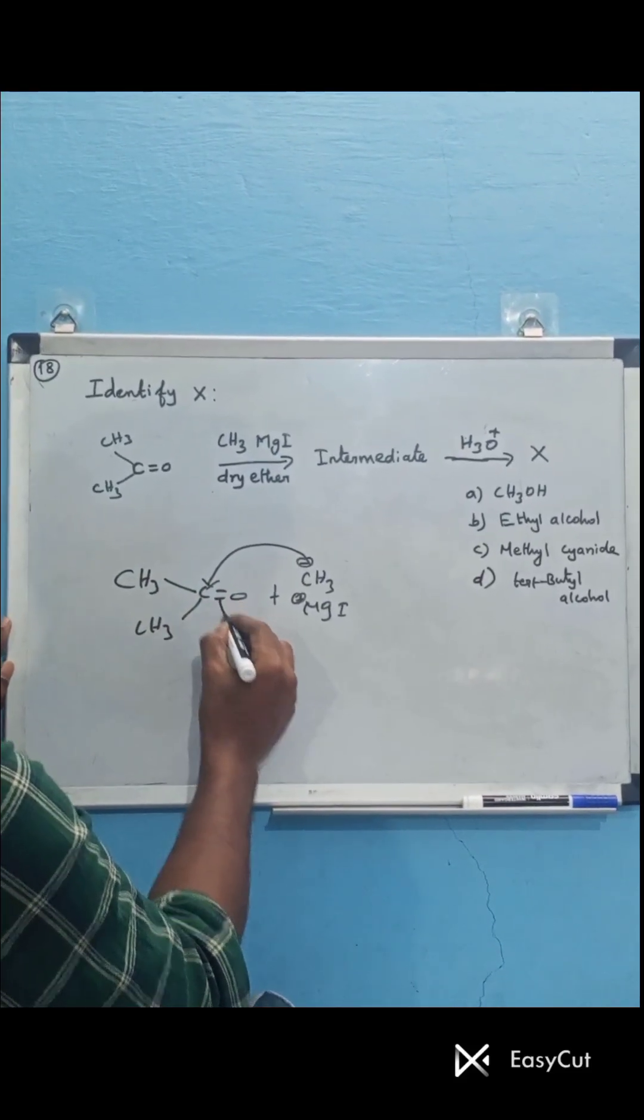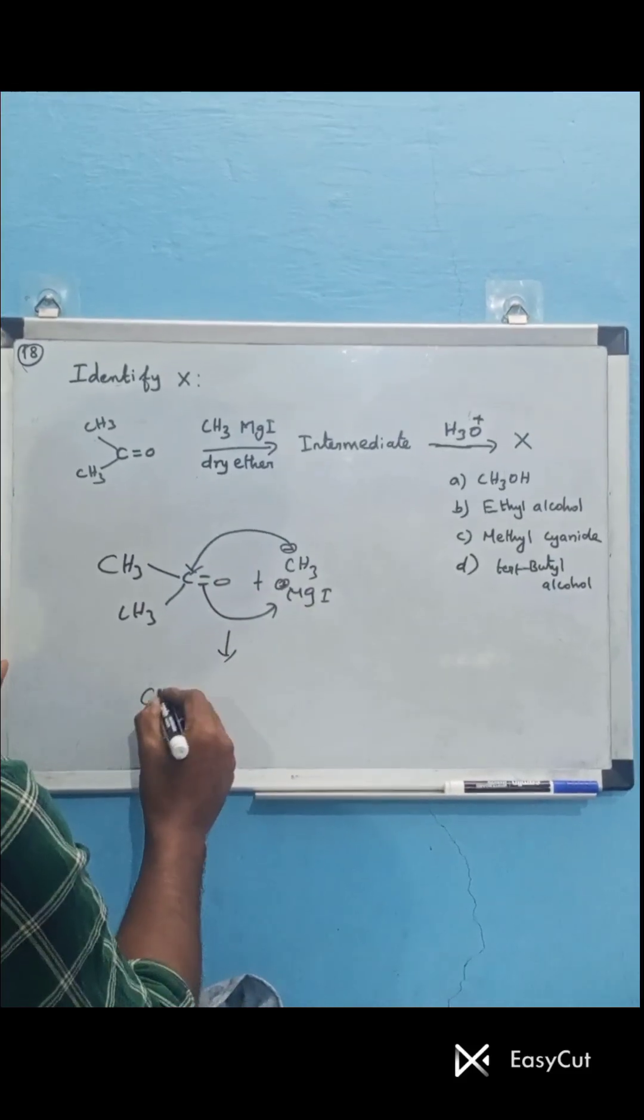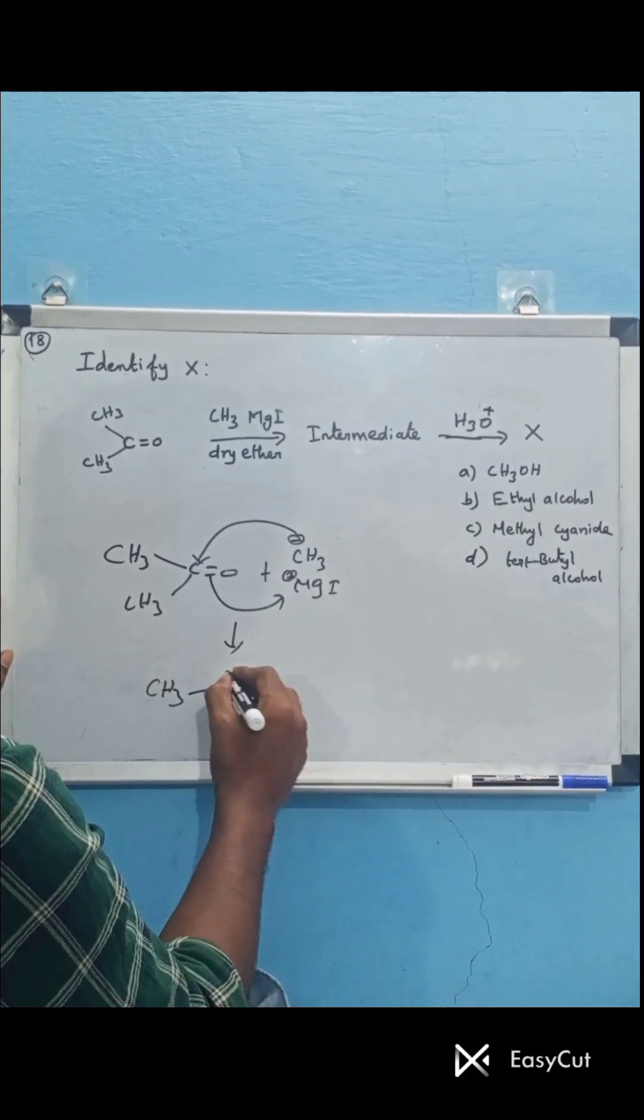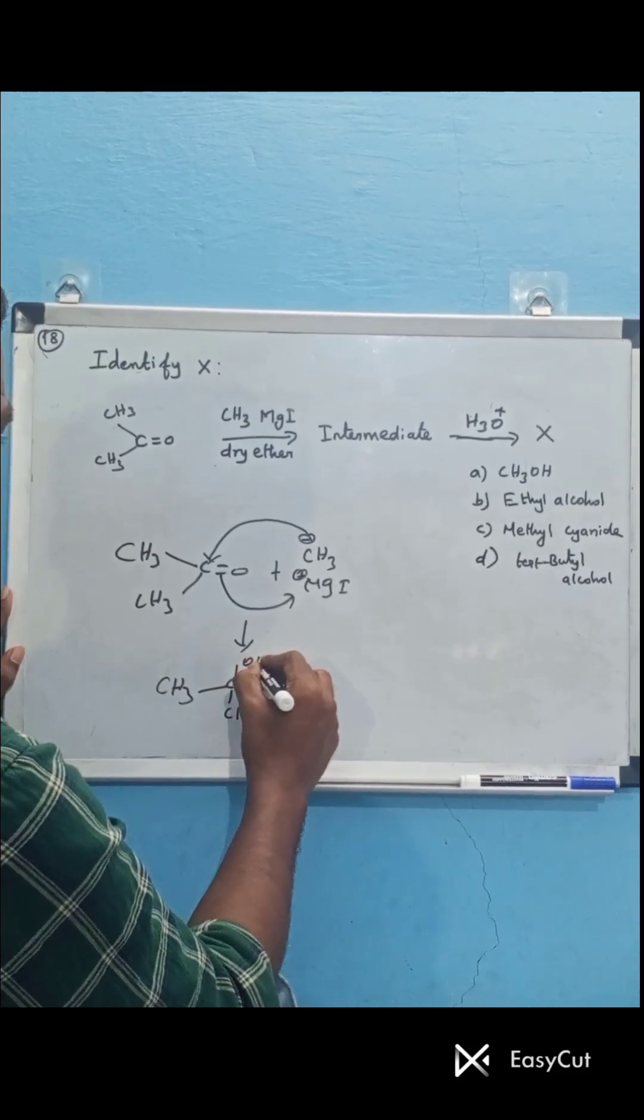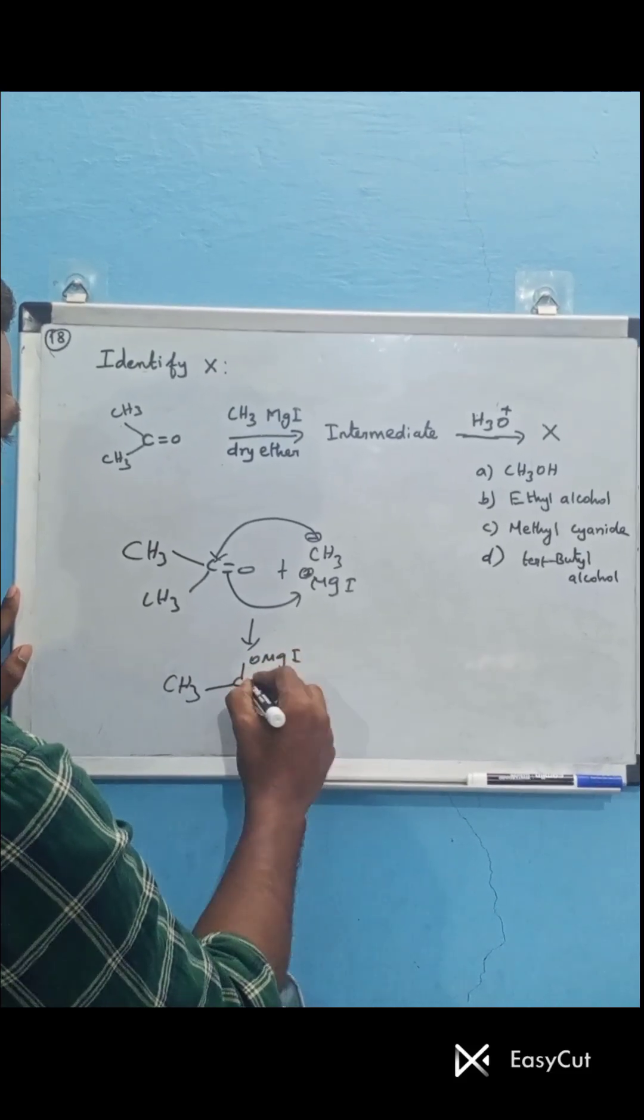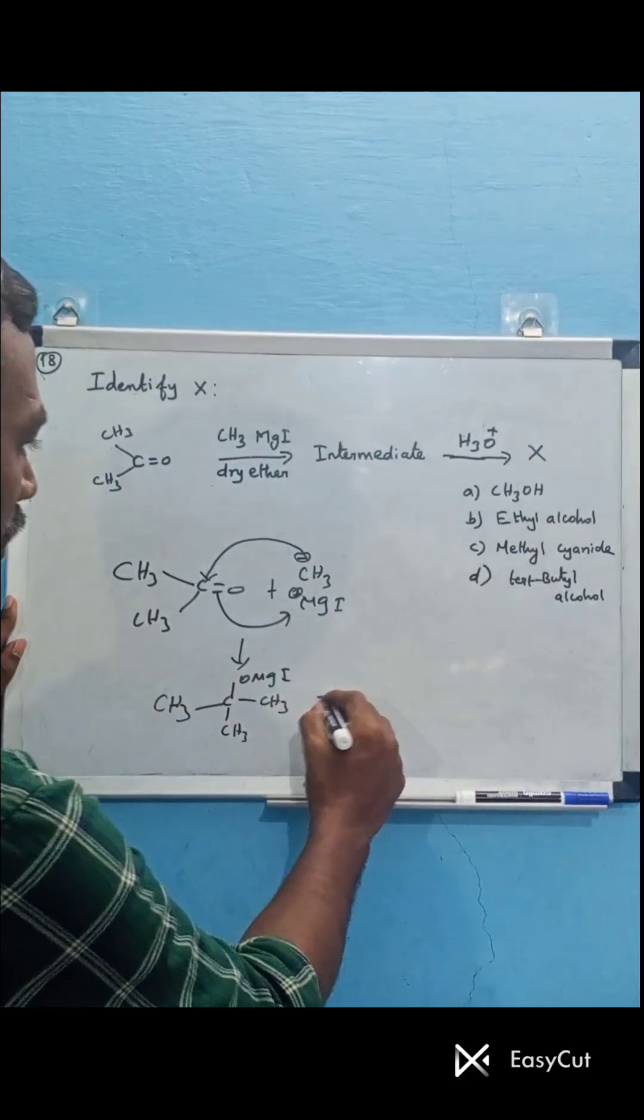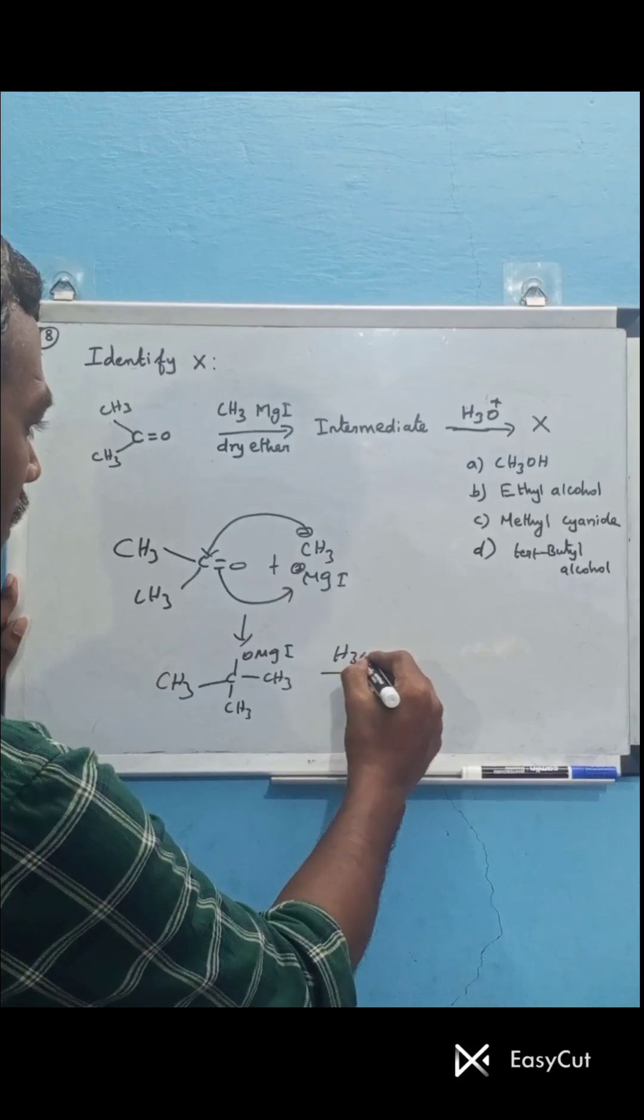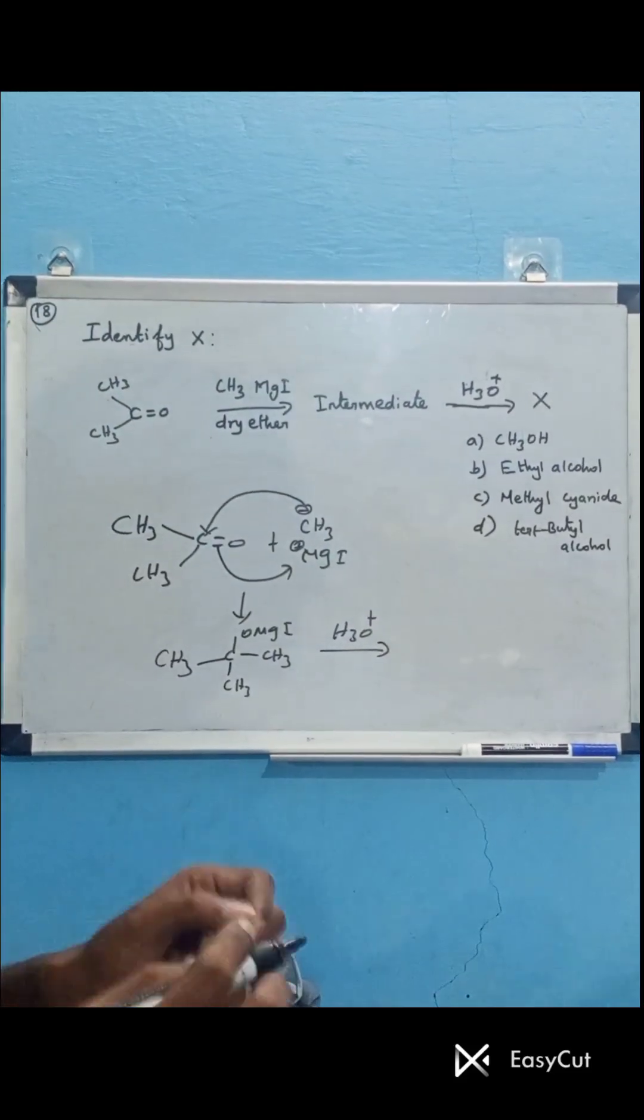This forms a tetrahedral alkyl oxide intermediate. The intermediate upon acidic hydrolysis is protonated to form tertiary butyl alcohol.